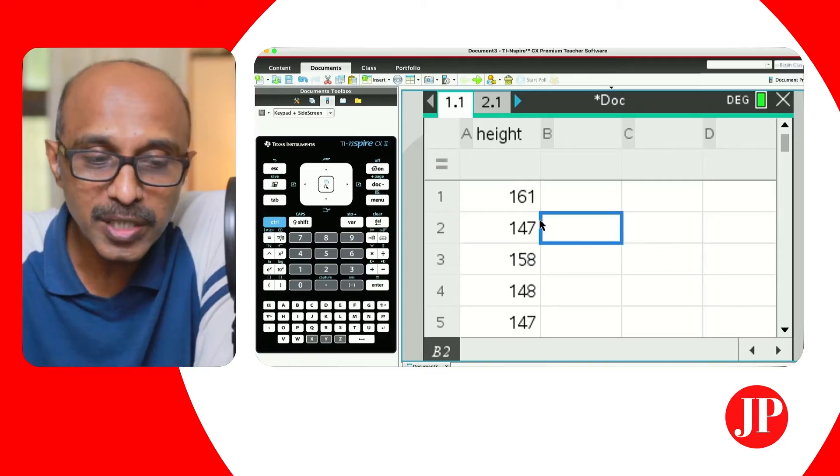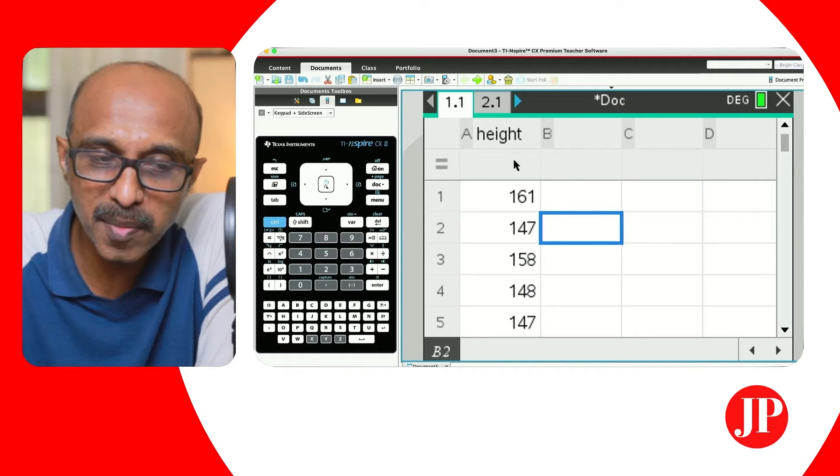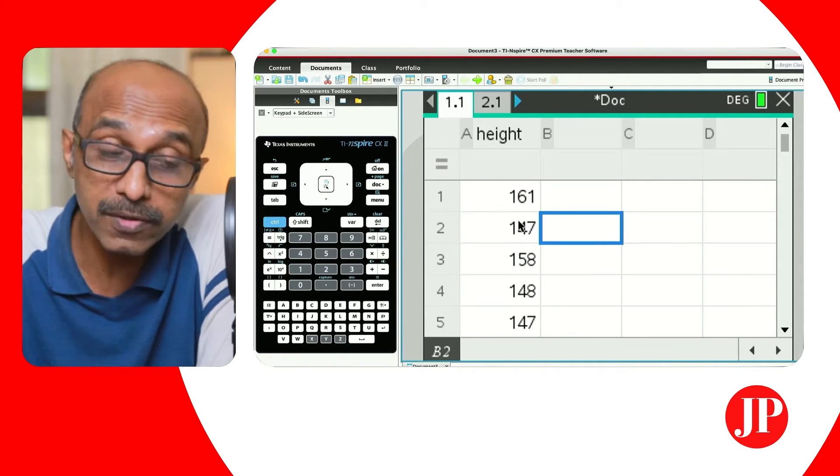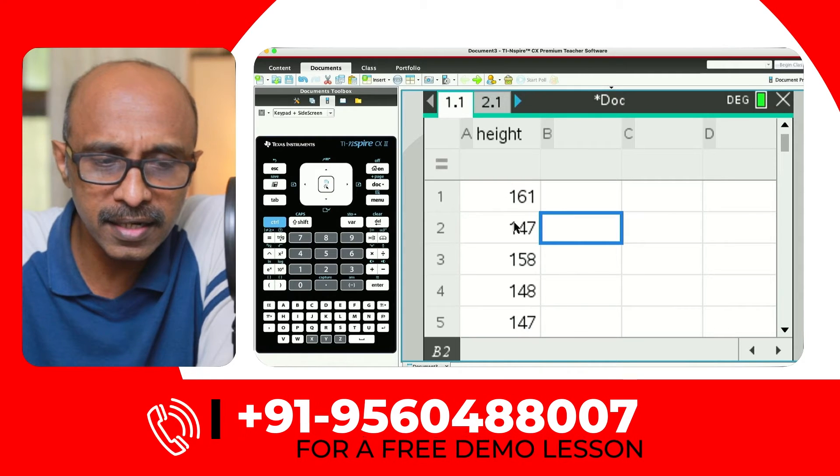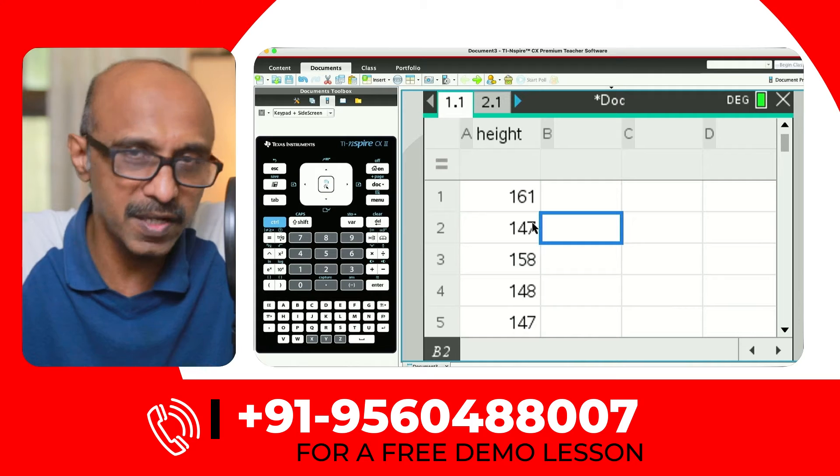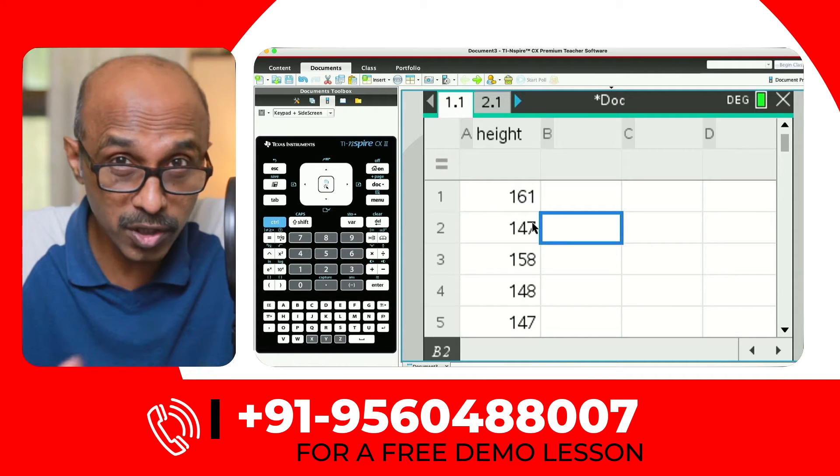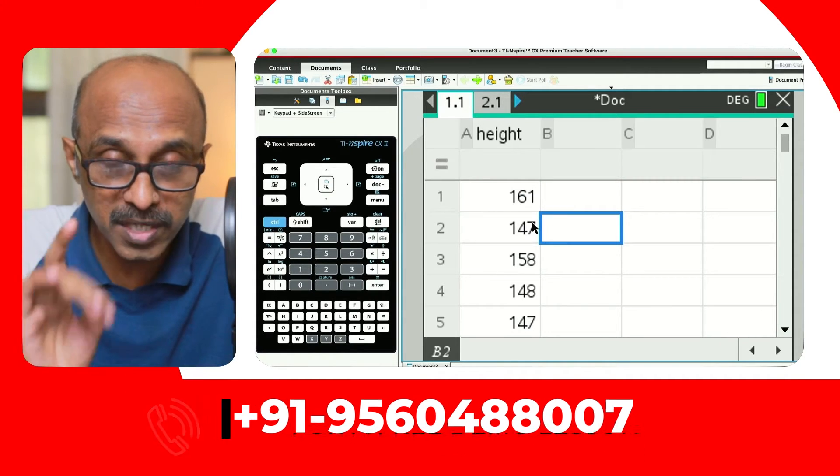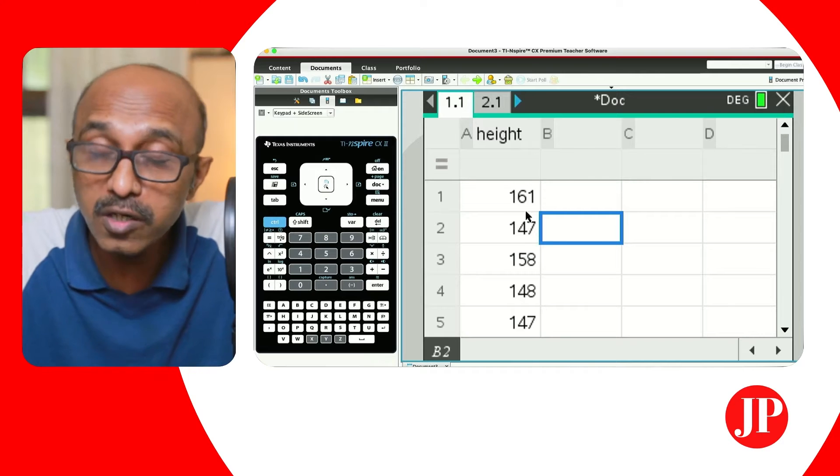So here's the list and spreadsheet page and I've already entered some data about heights of some students in grade 12, and they are ungrouped. So just a quick recap from some of the stuff that we discussed in the earlier videos. I'm going to link those videos in the description box. So please make sure that you take a look at them. This is ungrouped data.